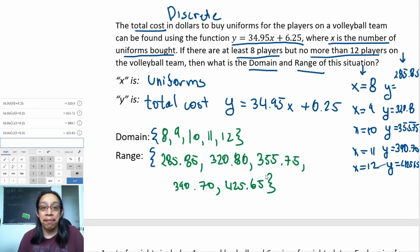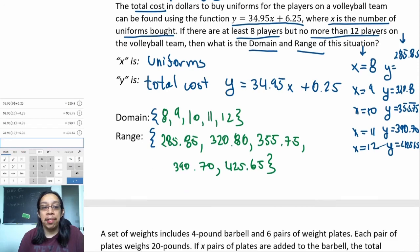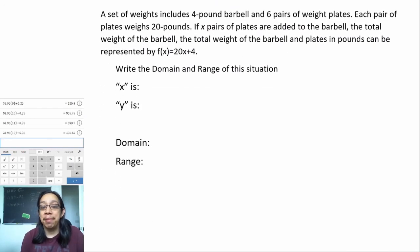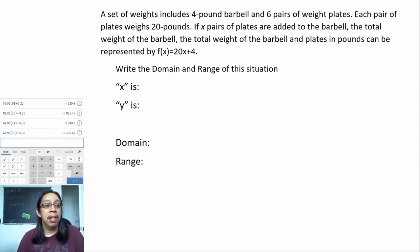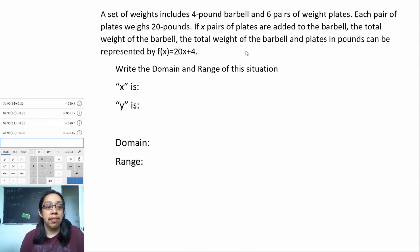Let's look at one more example, following the exact same steps. A set of weights includes a four-pound barbell and six pairs of weights; each pair of weights weighs 20 pounds. If x pairs of plates are added to the barbell, the total weight in pounds can be represented by f(x) = 20x + 4. They're asking us to write the domain and range of this situation.